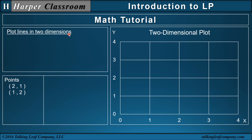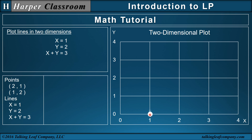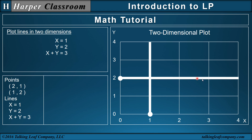I can also plot lines in two dimensions. Consider these three lines. First, x equals 1. I know that x equals 1 is this point right here, but every point along this line has an x-value of 1. So equations plot as lines. What about the equation y equals 2? I know y equals 2 right here, so every point along this line has a y-value of 2. So that equation plots as that line.